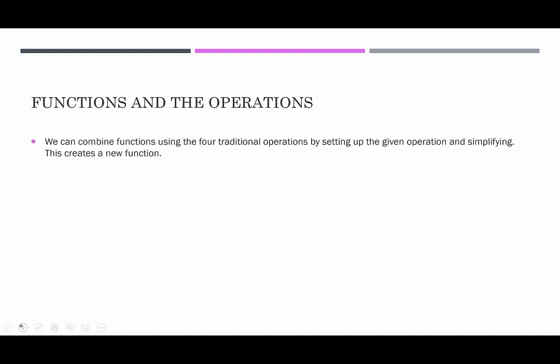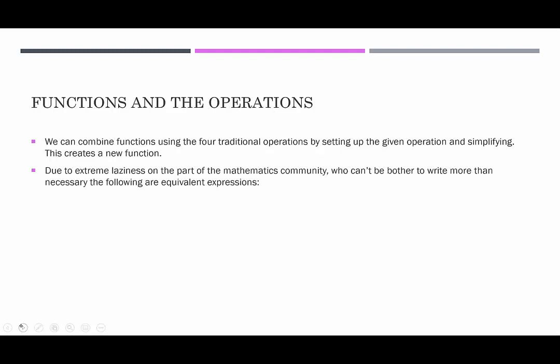We can combine functions using the four traditional operations by setting up the given operations and simplifying. This will create a new function, and that new function's name often reflects the operation used: if you added two functions, we call that the sum function; subtracted, the difference function; multiplied, the product function; divided, the quotient function.